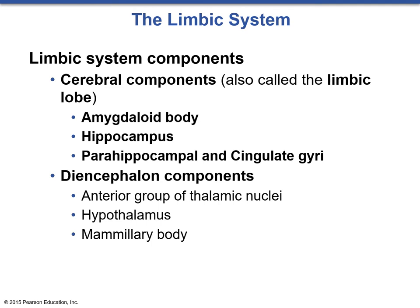The limbic system is a border system, so there are portions in the cerebrum and portions in the diencephalon. The cerebral components are the hippocampus, the amygdaloid body, and the parahippocampal or cingulate gyri. The diencephalon components are the anterior thalamus, hypothalamic nuclei, and the mammillary body.